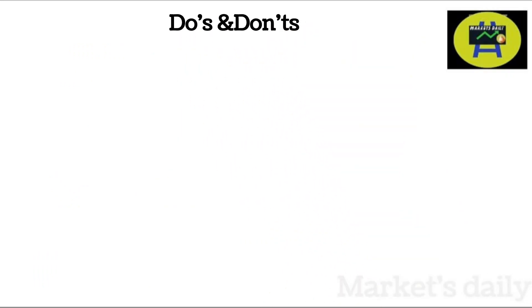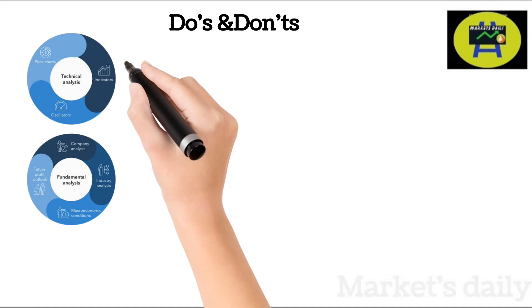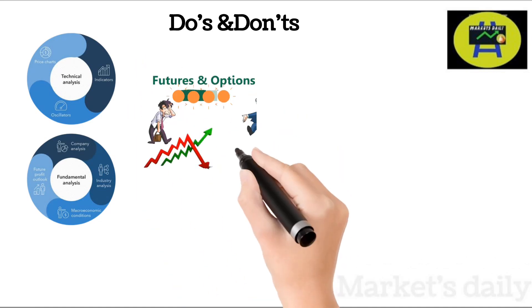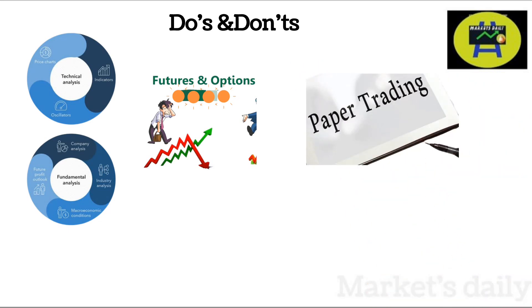As a beginner, what are the dos and don'ts before starting to invest? First, learn fundamental analysis and technical analysis properly. Second, do not buy or sell in the futures and options segment. Third, do paper trading — which means you note down the price when you buy a stock, then track when the price goes up or down, without using real money. Follow this for at least one year. The reason for these three points is: do not put your real money into the share market before gaining confidence.